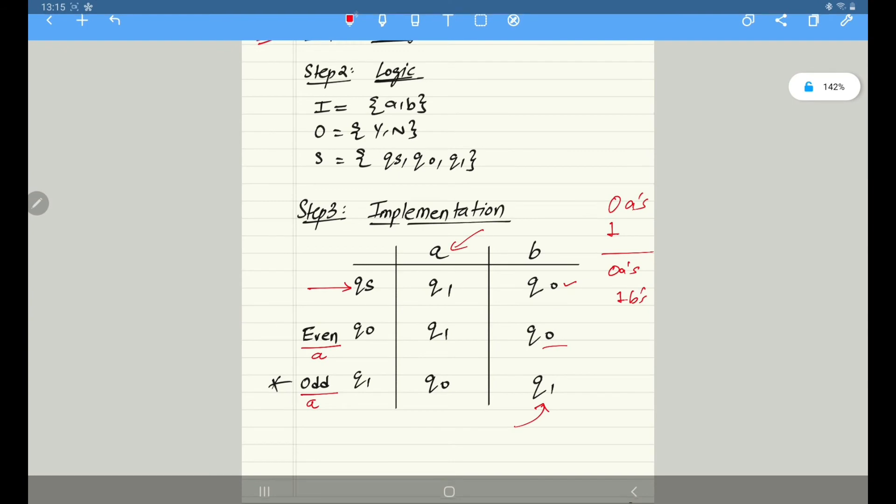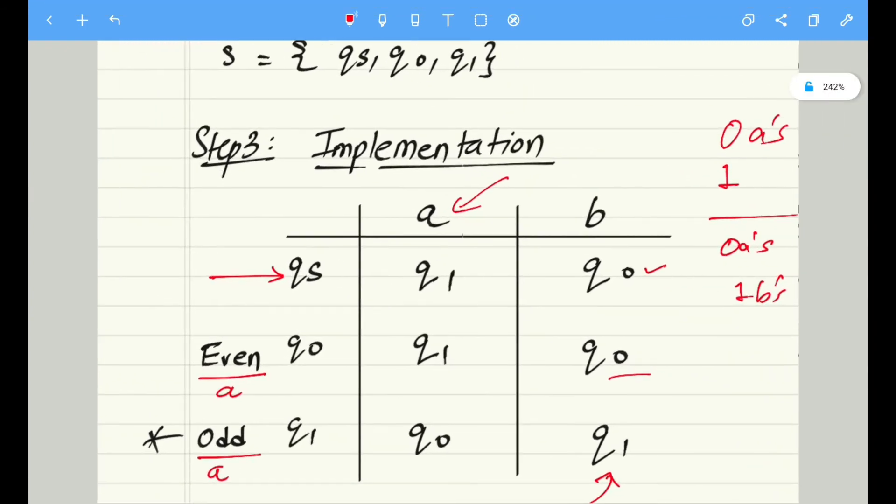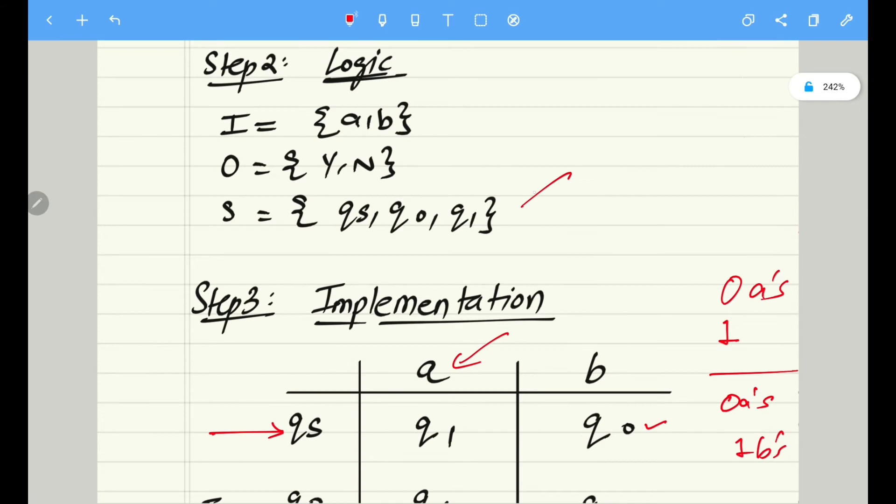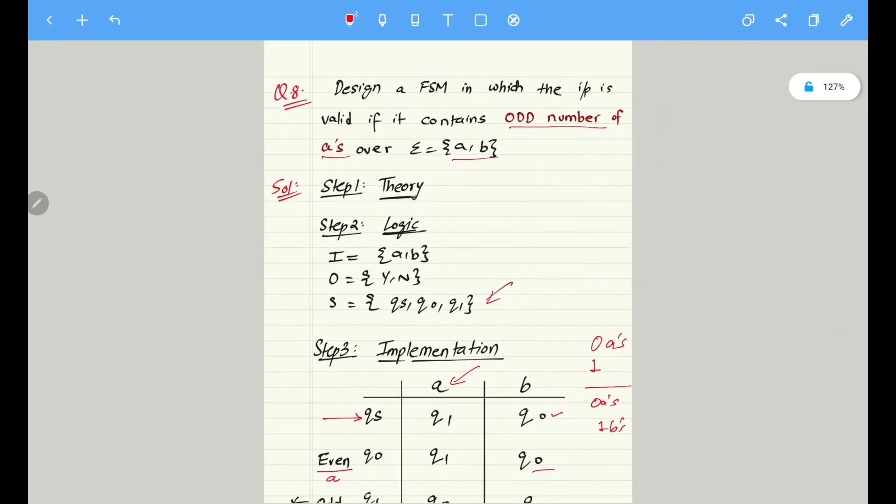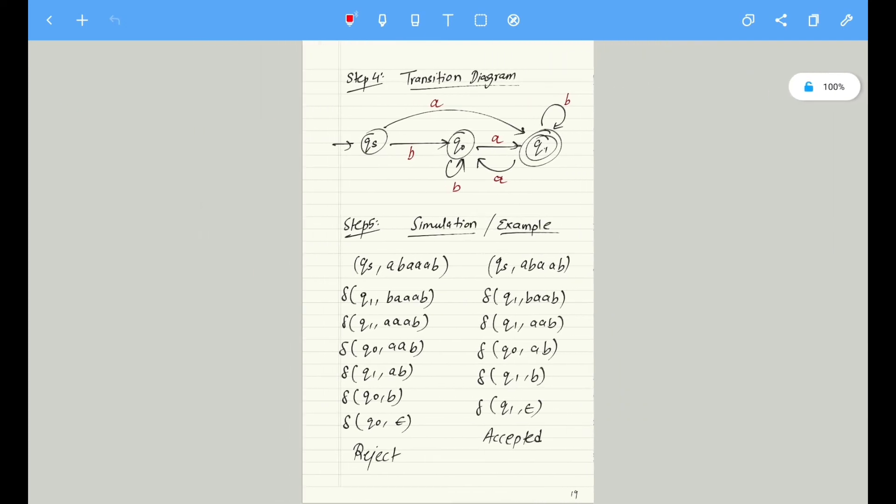This is the implementation part in this question. Based on this implementation, we can now write the number of states over here, which is qs, q0, q1. Based on this, we can construct the transition diagram.